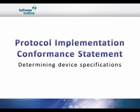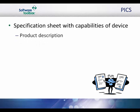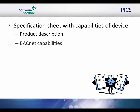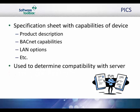Every BACnet device is required to have a PICS, or Protocol Implementation Conformance Statement. It is basically a BACnet specification sheet containing a list of a device's BACnet capabilities. It contains a general product description, details of the product's BACnet capabilities, the LAN options available, and a few other items relating to character sets and special functionality. A PICS is the first place to look to determine if a BACnet device is compatible with a particular server.